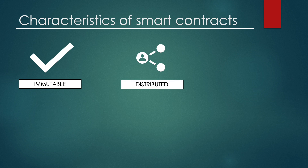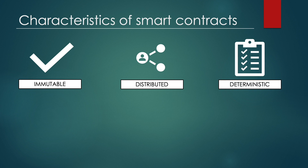Smart contracts are distributed. Any smart contract is replicated and distributed by all the nodes connected to the network. Everyone is guaranteed to have a copy of the established conditions and they cannot be changed at will by any of the one parties. Smart contracts are also deterministic. They can only perform actions for which they have been designed for, but only when the conditions are met. The end result will never vary, no matter who executes it.